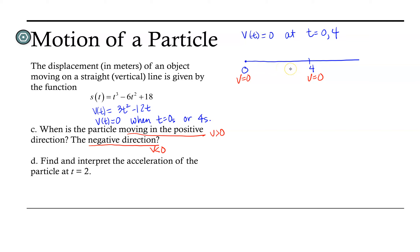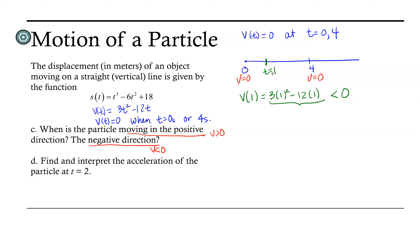To answer this question about moving in the positive or negative direction, we simply need to determine the sign — positive or negative — of velocity in the intervals between points where velocity equals 0. We'll choose a test point; let's try t equals 1. Velocity at 1 is 3 times 1 squared minus 12 times 1. We're not necessarily interested in that number — what we're interested in is the sign. We can see easily this is a negative number, so velocity is negative between 0 and 4.